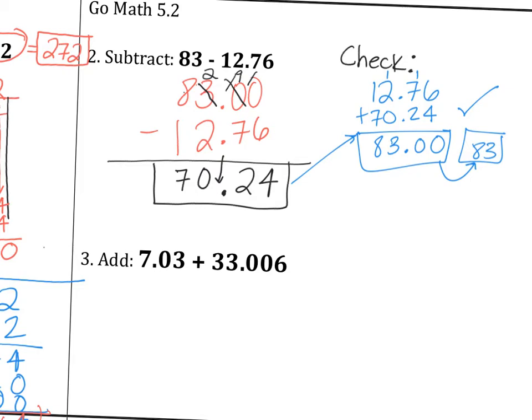Now, number 3, you also have to line them up because you're adding or subtracting. So we have 7.03 plus 33.006. So in the empty spaces, just put a 0 and add. 0 plus 6, you can do that. 0 plus 6 is just 6. 3 plus 0 is just 3. 0 plus 0 is just 0. Bring down the decimal. 7 plus 3 is 10. And then we have 3 plus 1, which is 4. So we got 40.036.